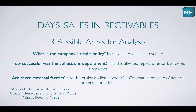Ratio analysis is about asking better questions and seeking further insight. What are three possible areas for analysis based on our day sales in receivables result? First, we could look at the company's credit policy: has it changed, and does the credit policy affect sales revenue? For instance, if you loosen the credit policy and change payment terms from 30 days net to 60 days net, you should see a boost in sales revenue, allowing more customers to purchase on more favorable credit terms.